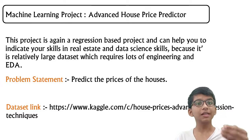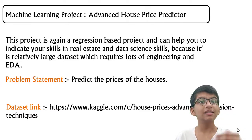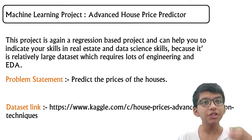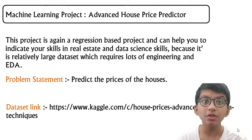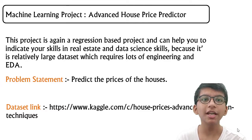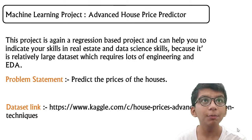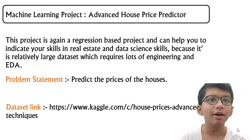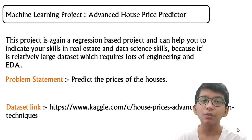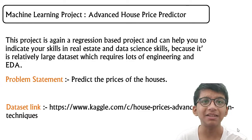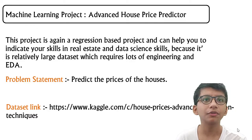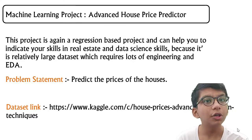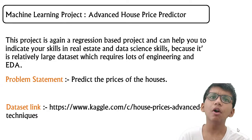After the stock price predictor, we have the advanced house price predictor. This is a very good regression project — it shows your skills in regression analysis, data visualization, feature engineering, and feature selection. It's a full end-to-end data science project. You're given around 81 features and a large dataset; you have to select the most important features and then model it. Regression here is not easy — it's a real estate problem at an intermediate-to-advanced level.